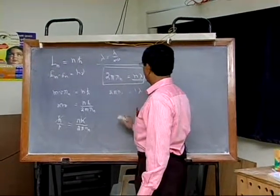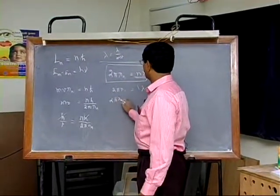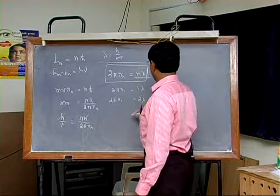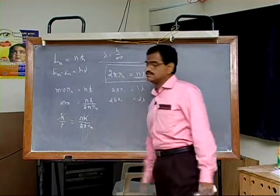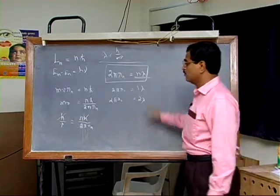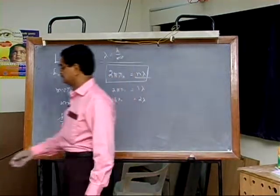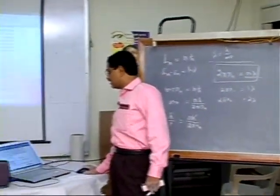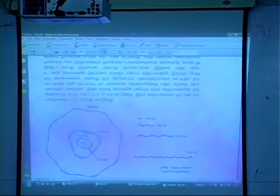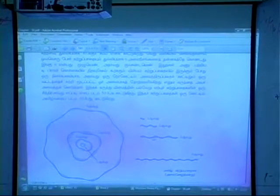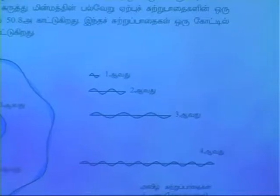2πR1 equals 1λ. 2πR2 equals 2λ. So, how did you do that? It's like a standing wave pattern: one wavelength, two wavelengths, three wavelengths in each orbit.